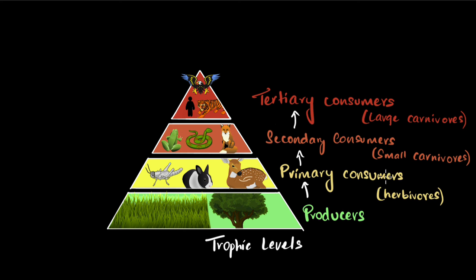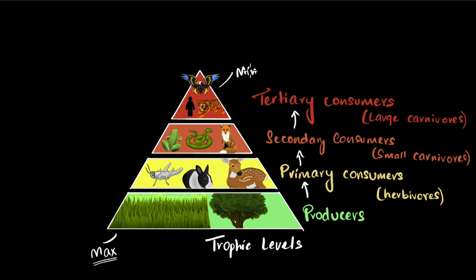We also see that at the bottom of the trophic level, the producers are maximum in numbers — you have the most individuals there. However, as you go up the trophic level, the number of individuals reduces, and that's why we have a pyramid shape. You have the minimum number of apex predators at the top.